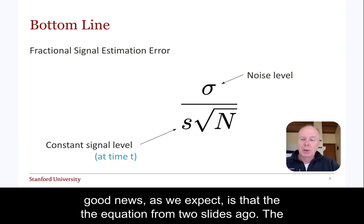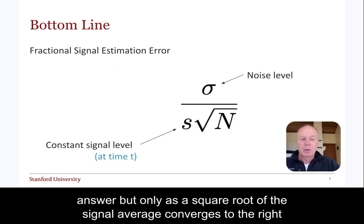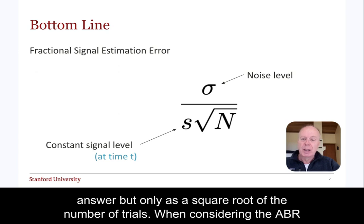The good news, as we expect, is that the signal average converges to the right answer, but only as the square root of the number of trials. When considering the ABR, this is the error bar that one should consider.